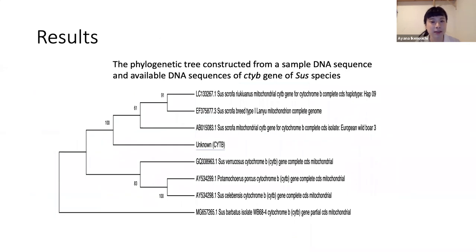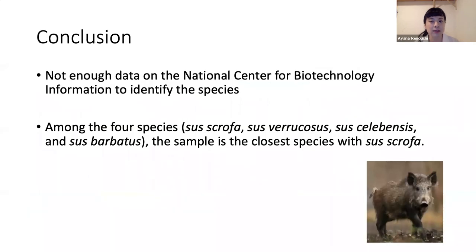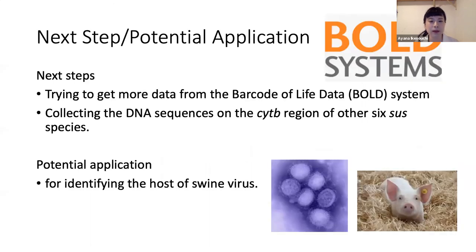The constructed phylogenetic tree shows that the most recent common ancestor of the unknown is the Sus scrofa species. However, since DNA sequences of the cytochrome B region of all 10 species under the Sus genus could not be obtained from the database, it is concluded that among the four species available, the unknown is the species evolutionarily closest to Sus scrofa. The next step is to collect DNA sequences of the other six Sus species to build a complete phylogenetic tree of all 10 species so that identification can be completed.